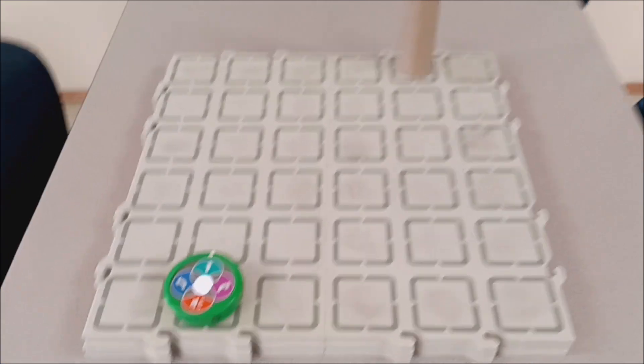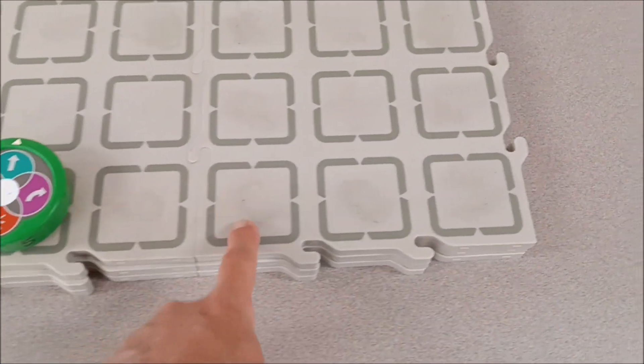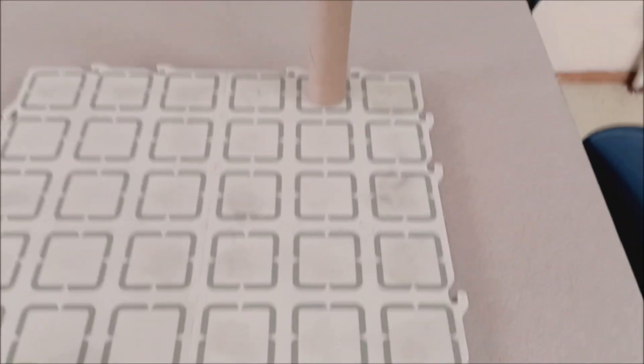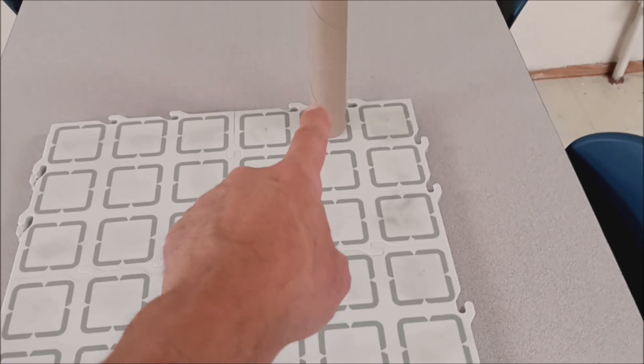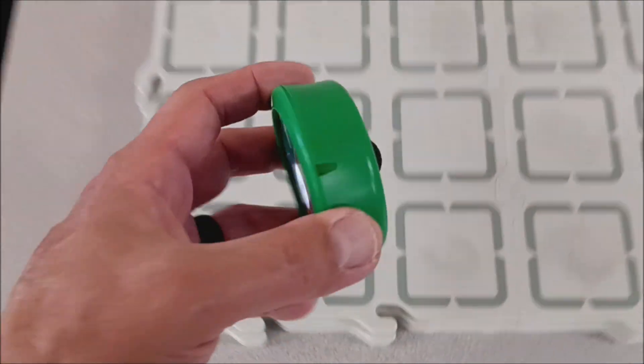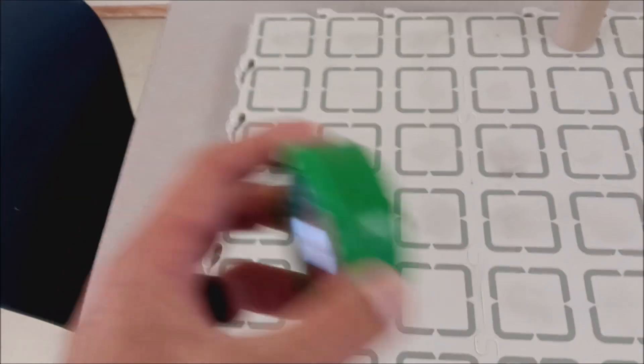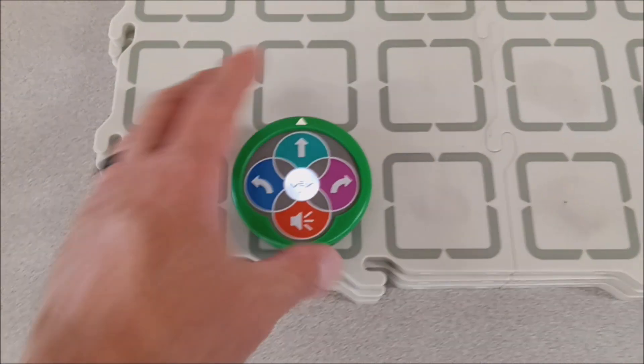So let's go ahead and just choose our path. Let's go ahead and do a right, and then we're going to do one, two, three forwards. And then one, two, three, four, five forwards there. So let's go ahead and get this thing started. And if you remember, if we want to get rid of any previous programs, we're going to just shake that off.